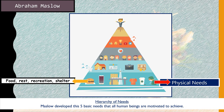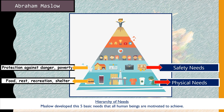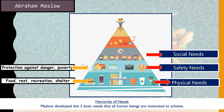Once physical needs are fulfilled, the next need is safety. This means people want to feel safe — by owning homes, having medical coverage, and having jobs. These are the safety needs a human being wants to achieve.